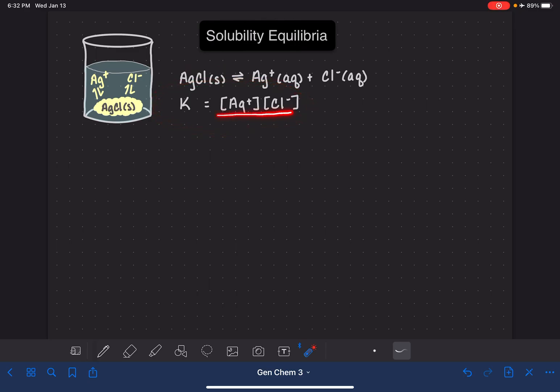So this isn't a fraction. There isn't going to be anything down here in the denominator. This equilibrium expression is a solubility equilibrium expression. We give the equilibrium constant K the subscript SP. That KSP stands for solubility product. And we refer to this as the solubility constant. Again, SP stands for solubility product.